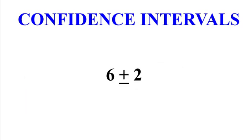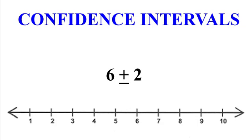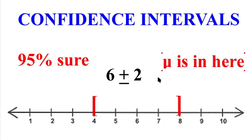So let's do an example. So the sample mean is 6 and the margin of error is 2. So if we put that on a number line, 6 minus 2 is 4, 6 plus 2 is 8. So anywhere between these two red brackets, we think that the true population mean is in here somewhere. We're trying to trap the true population mean. Again, we're only about 95% sure because it's a 95% confidence interval. But you see how that works.